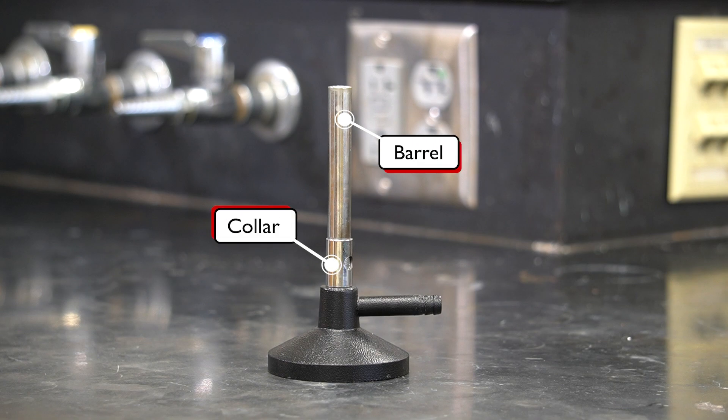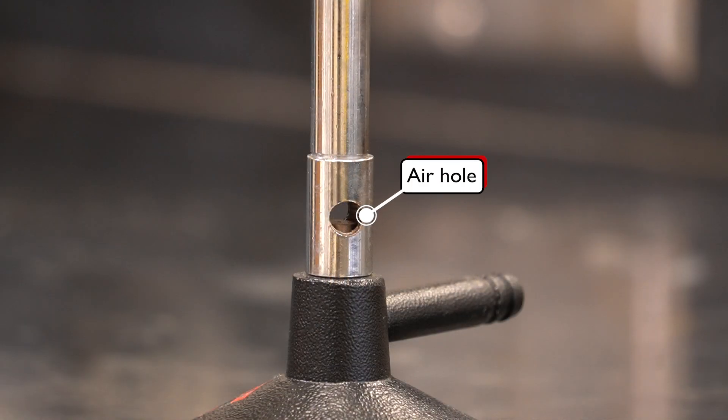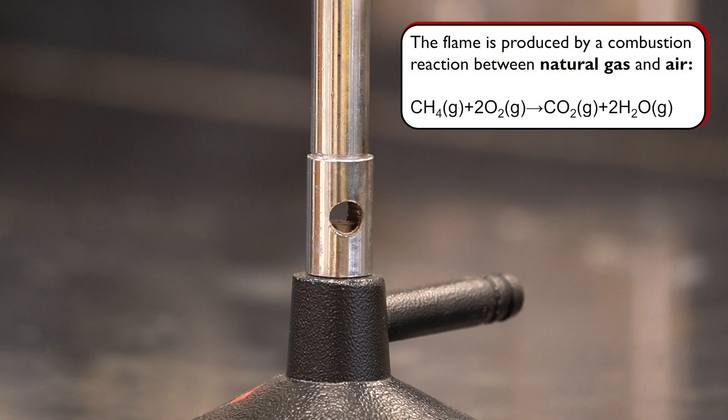Down here is the collar, which wraps around the bottom of the barrel. There is a small air hole on the side of the collar that allows for air to enter the burner. As the flame is produced by a combustion reaction between natural gas, methane, and oxygen, supplying sufficient air flow ensures a complete and hot flame.